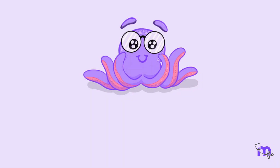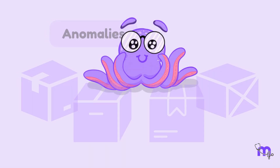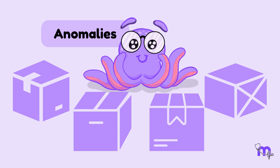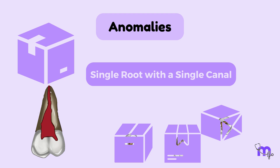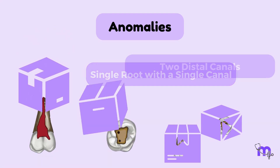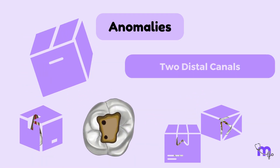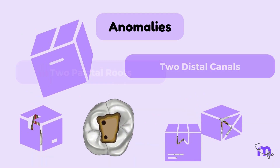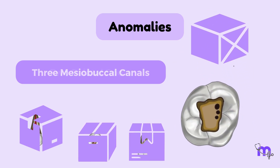Let's move on to the anomalies associated with the first molars. These include the presence of a single root with a single canal, two distal canals, two palatal roots, or three mesiobuccal canals.